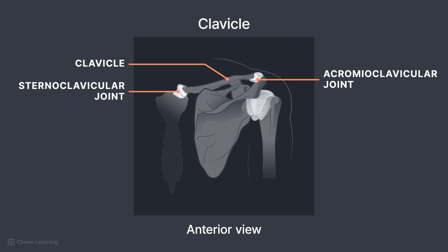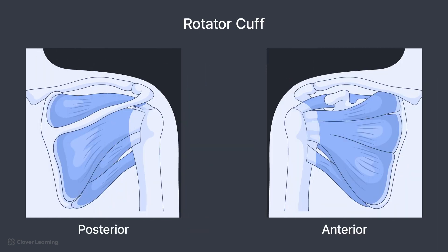While the bony structures are important, they are not the usual focus for MRI imaging. Soft tissues like the rotator cuff and glenoid labrum are a more common focus of studies. The rotator cuff is comprised of four muscles and tendons and allows for the vast range of motion in the shoulder.